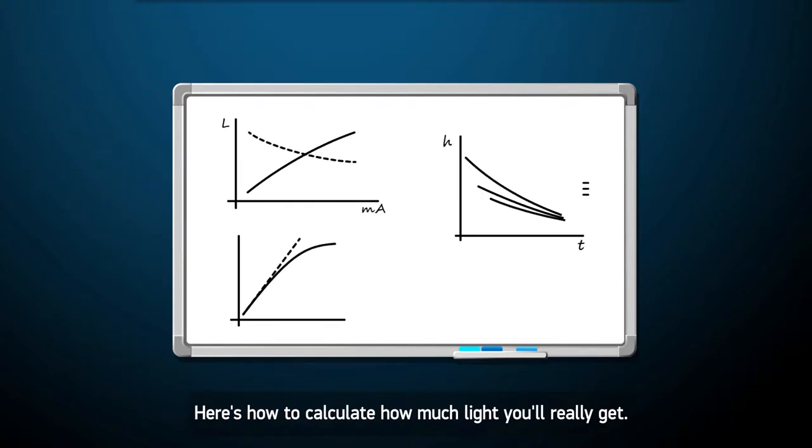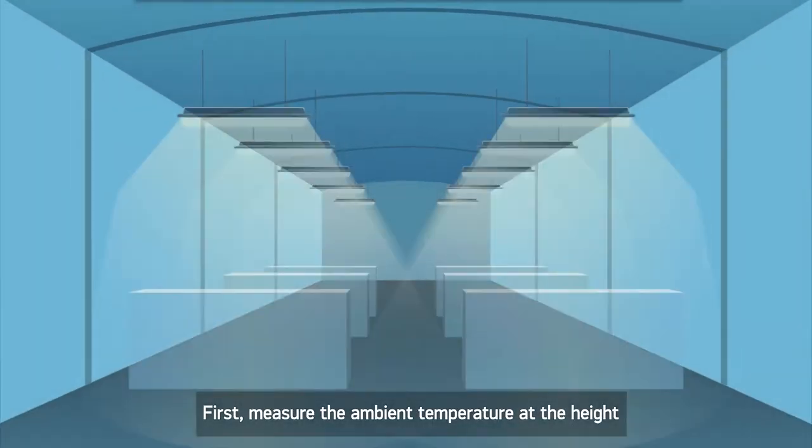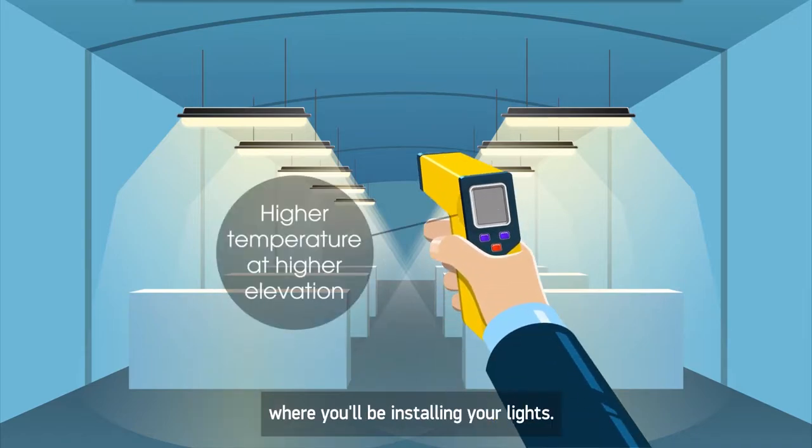Here's how to calculate how much light you'll really get. First, measure the ambient temperature at the height where you'll be installing your lights.